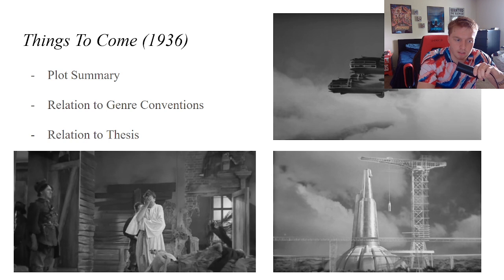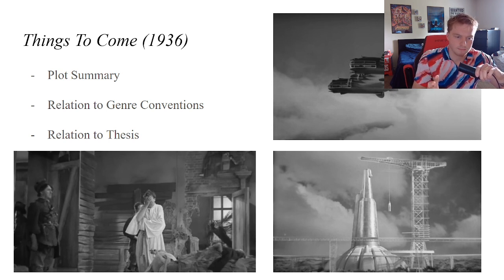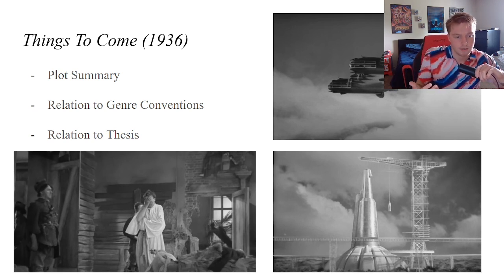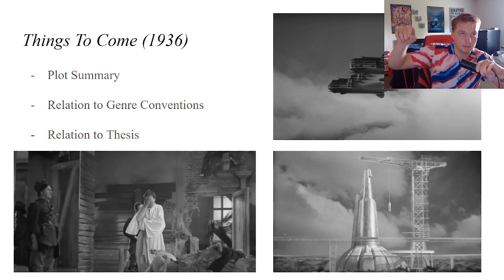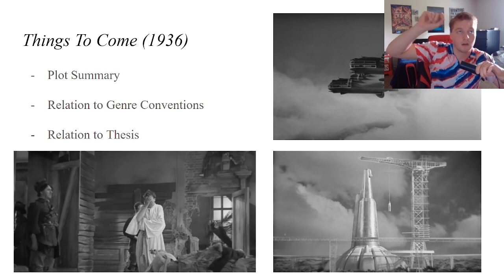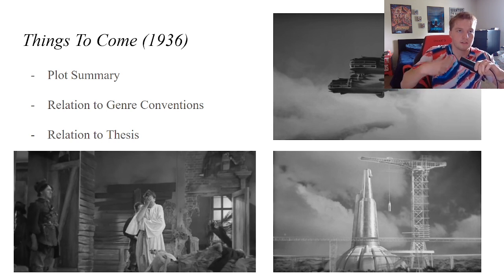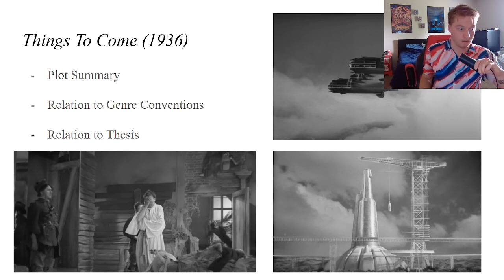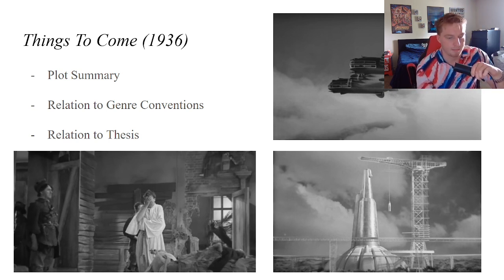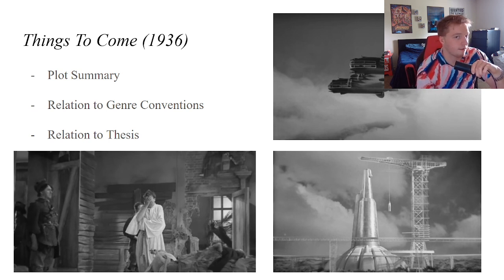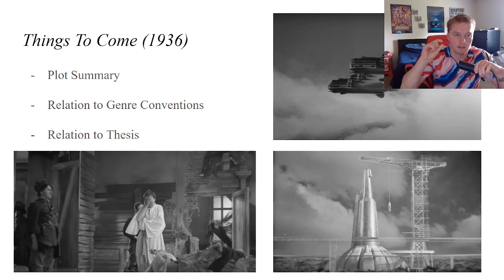The first film is Things to Come. This movie consists of three periods of time. It starts off in 1935, a couple years before World War II would have happened, with this tension of an impending war — and then immediately it happens. The second part of the film is set around 1966 or 1970, where we see the first glimpse of our main character.